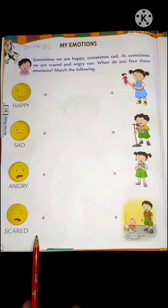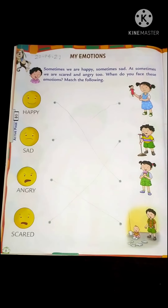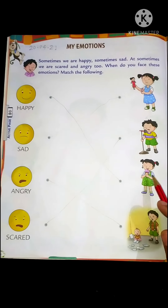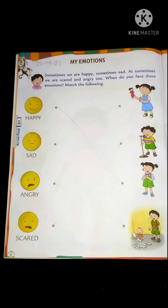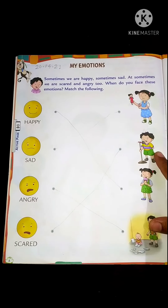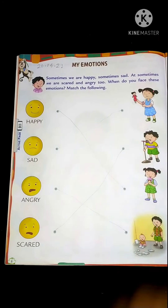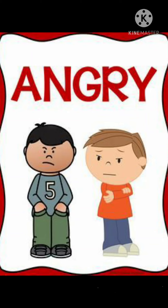Next face: Scared. When do you get scared? Scared means dara hoa — to be afraid. When you listen to a ghost story, you get scared, right? Look at this boy — he is going to give a speech at the mike, but he is scared. So this is the scared face. So we have: happy, sad, angry, and scared.